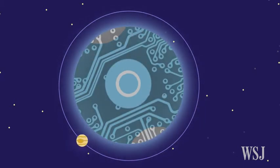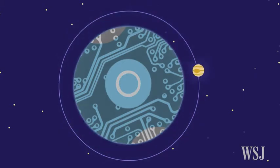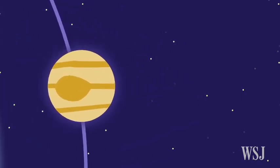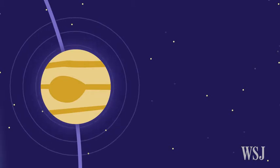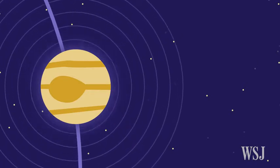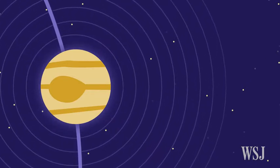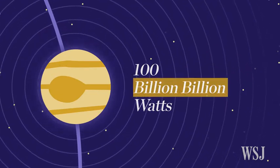This is a megastructure that would enclose the star and harness its power. A Type 2 civilization near HD 164595 could broadcast the signal in all directions, not just at our solar system, by harnessing 100 billion, billion watts of power.